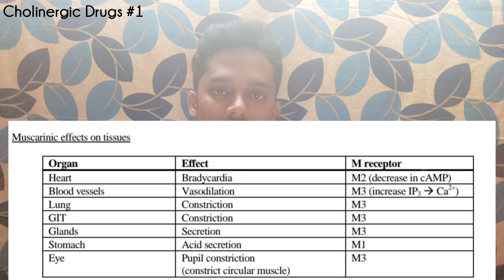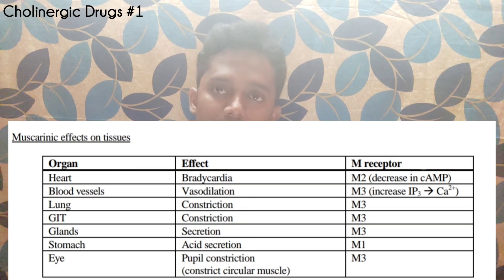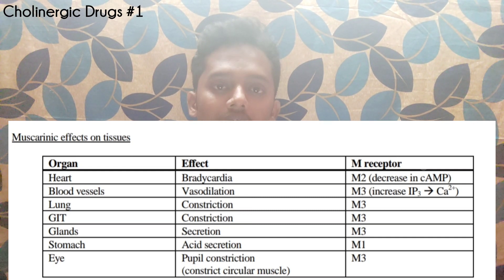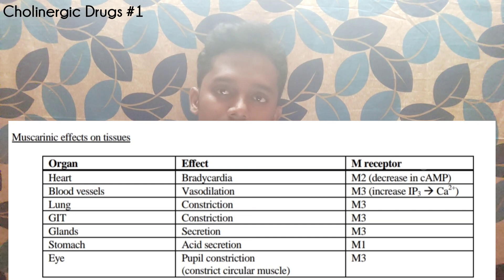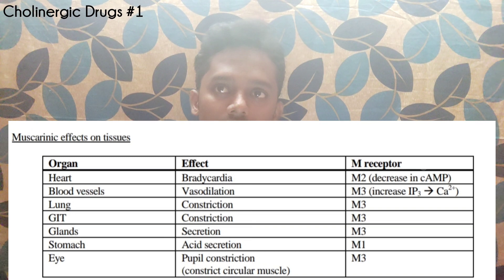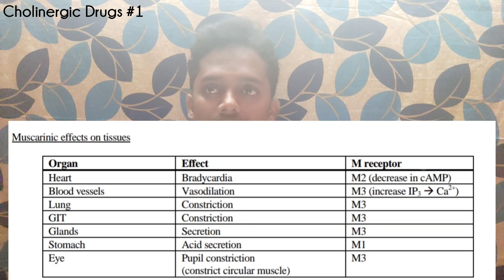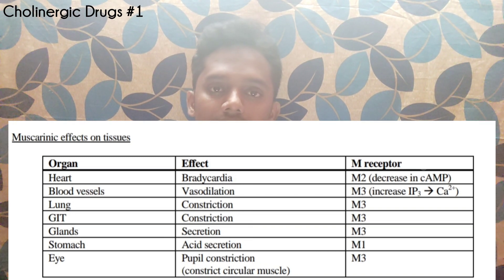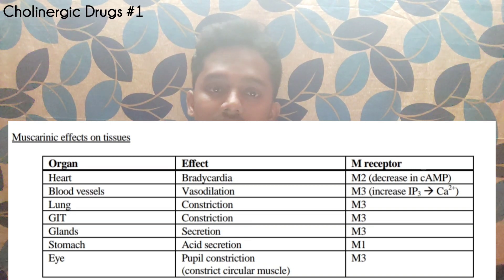Where are they found? M1 receptor is present in the stomach and is involved in gastric acid secretion. Next, M2 receptor is found predominantly in the heart — this is the predominant receptor there.